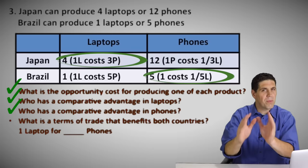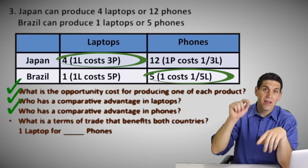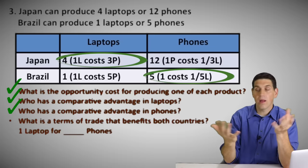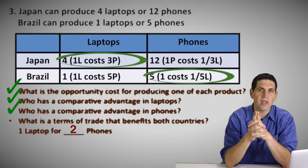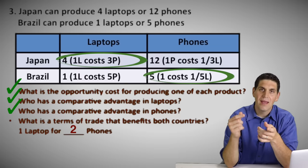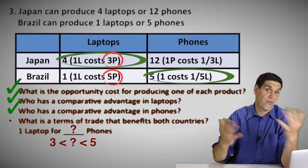The last part is figuring out the terms of trade that would benefit both countries. One laptop for how many phones? Two doesn't work — that's too low for Japan, and seven is too high for Brazil. The number has to be between three and five. So four makes the most sense — one laptop for four phones would benefit both countries.